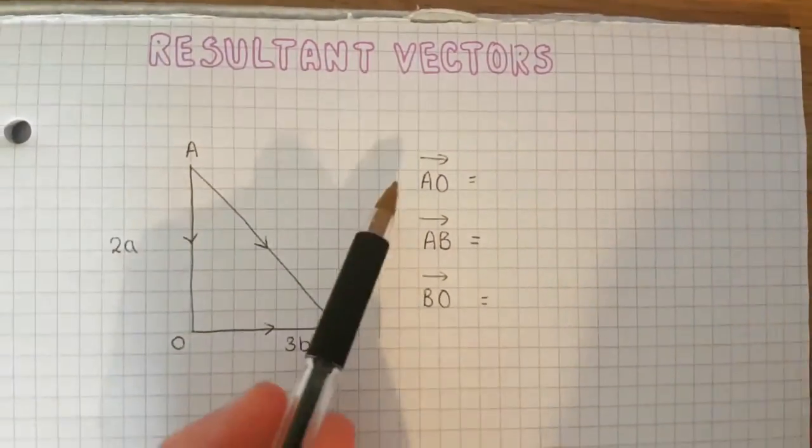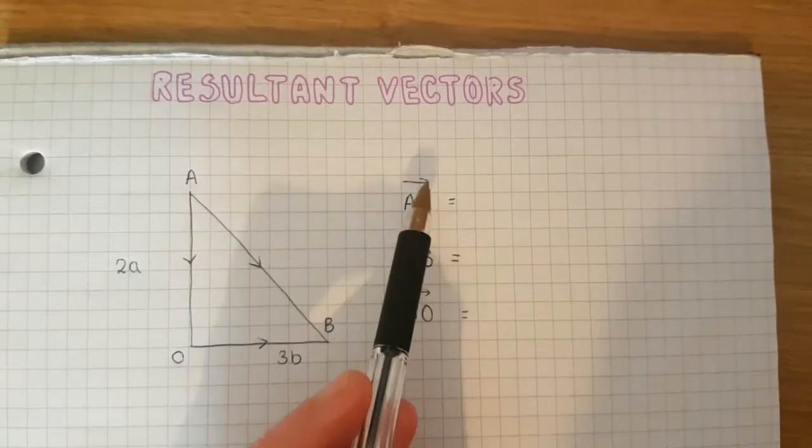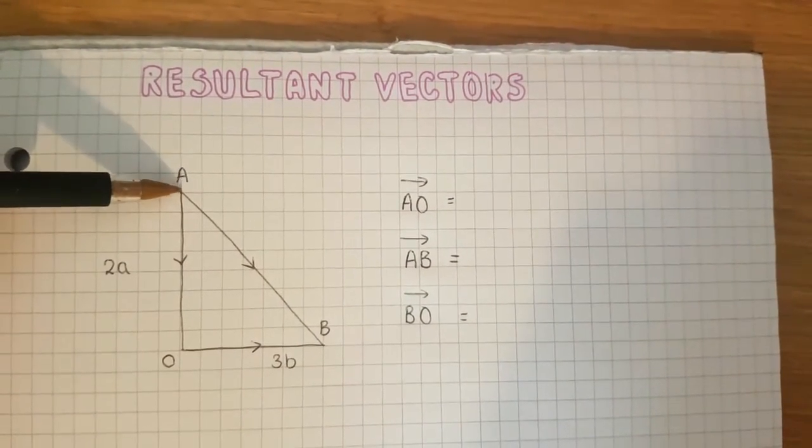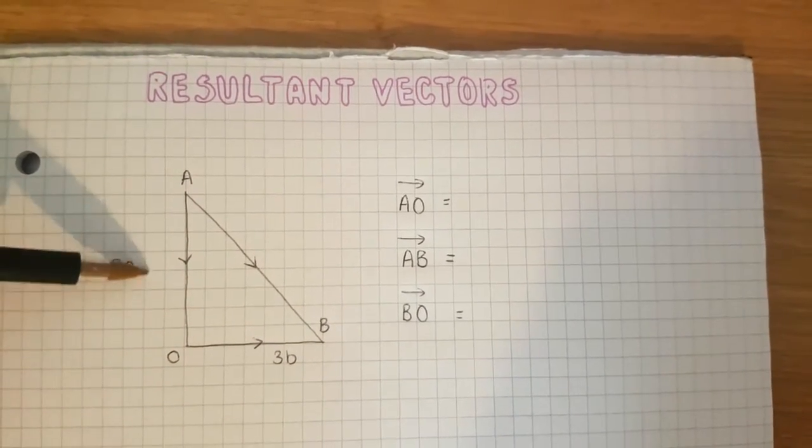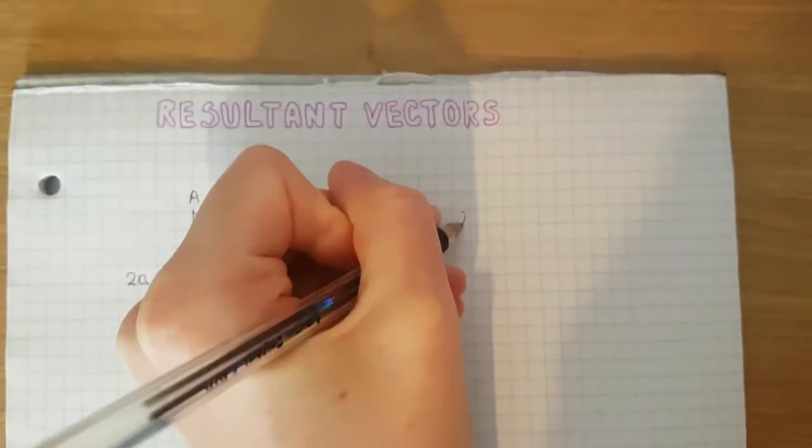The first thing I want to look at is how we can describe certain vectors. This vector here is AO, which means we go from A to O, so it's this vector going this way. I've already said that this vector is 2a, so I can describe AO as 2a.